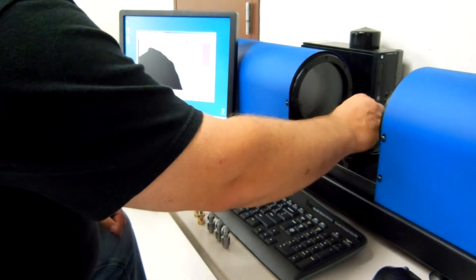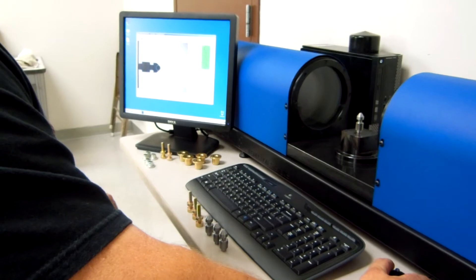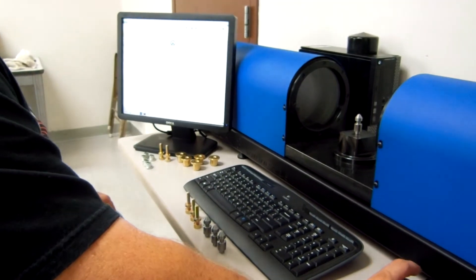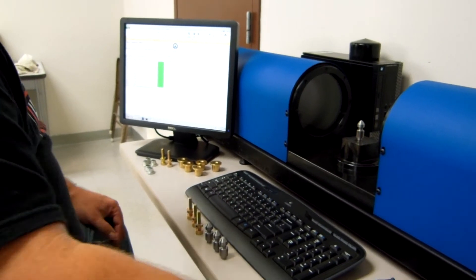If the customer requires reports of the data, data can be collected and a report can be printed out. It shows all features, labeled with part number, date, and time of inspection.